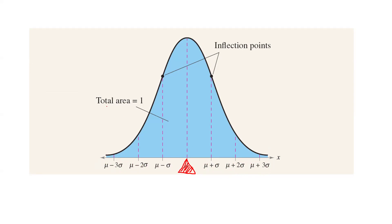The area below the curve — this blue shaded region — is 100% or 1. The inflection points are at mu plus sigma and mu minus sigma, so these two points on the horizontal line are at mu plus sigma and mu minus sigma.